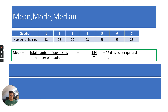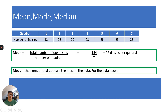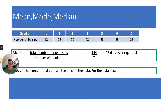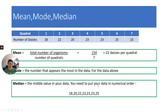The mode is the number that appears most often in the data. Here, 23 appears three times, so the mode is 23. The median is the middle value — put your data in numerical order from smallest to largest, and the middle value is the median. In this case, the median is also 23.